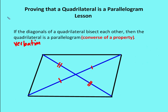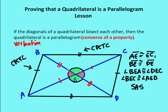Number four: if the diagonals of a quadrilateral bisect each other, then the quadrilateral is a parallelogram. I've marked up the diagram. I'm going to use my knowledge about vertical angles and label point E, which is the intersection of the two diagonals. I know that BE is congruent to ED, AE is congruent to EC, angle BEA is congruent to angle CED, and angle BEC is congruent to angle AED. So I have four triangles — two pairs of congruent triangles.